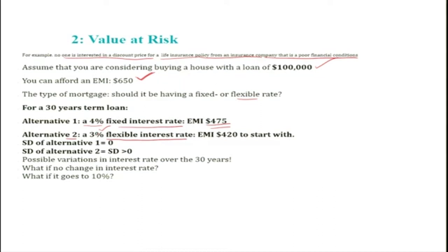If there is no change in the market rate of interest, the EMI starts at $420. In Case 1 (fixed rate), the standard deviation is 0. In Case 2 (flexible rate), the standard deviation is greater than 0 because there is a possibility that the market rate of interest will change — there is possible variation in interest rate over 30 years.